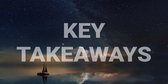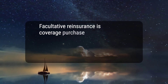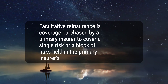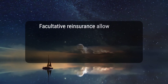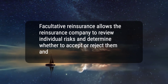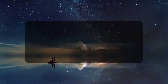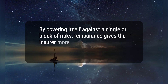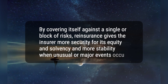Here are three key takeaways. 1. Facultative reinsurance is coverage purchased by a primary insurer to cover a single risk or a block of risks held in the primary insurer's book of business. 2. Facultative reinsurance allows the reinsurance company to review individual risks and determine whether to accept or reject them, and so are more focused in nature than treaty reinsurance. 3. By covering itself against a single or block of risks, reinsurance gives the insurer more security for its equity and solvency and more stability when unusual or major events occur.